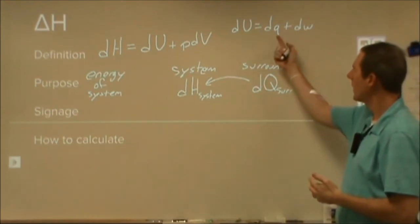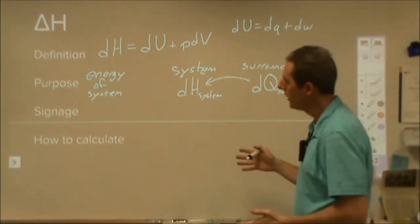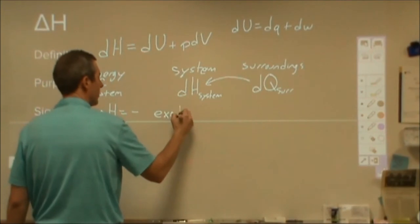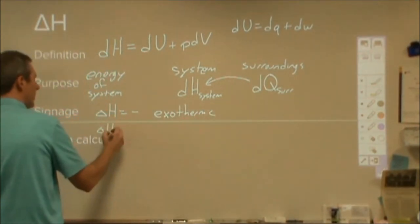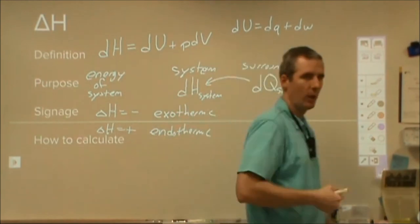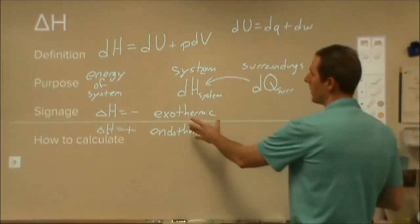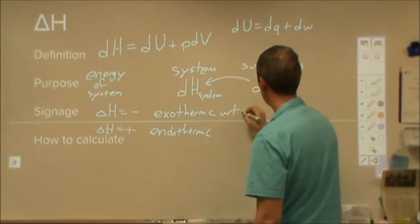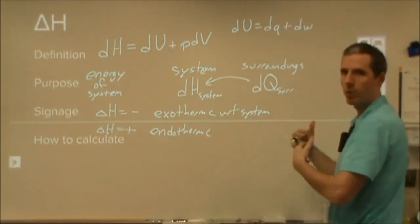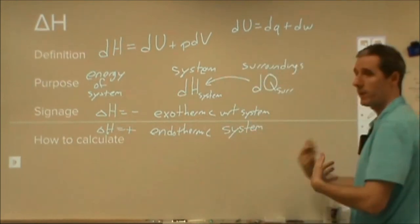This simplifies the whole exchange. For the signage of enthalpy, if delta H is negative, that means exothermic. If delta H is positive, then we're looking at something endothermic. But this is incomplete. When we say delta H is negative, that's applied toward the system. So exothermic with respect to your system means it's exothermic for your system and endothermic for the surroundings. Delta H positive means endothermic for your system but exothermic for your surroundings.